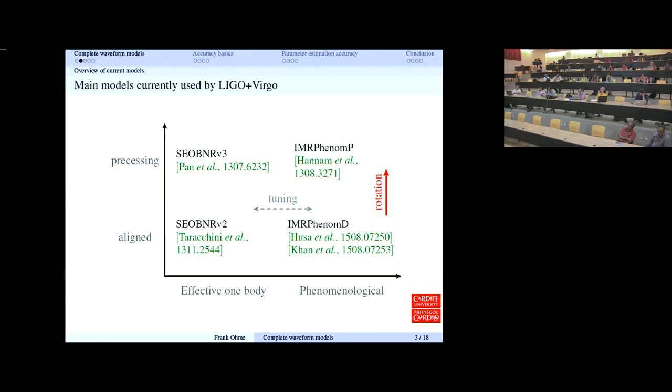Precessing waveforms can be modeled quite accurately by using non-precessing waveforms and just rotating the waveforms appropriately. The rotation that we need is the precession of the orbital plane for a fixed observer. There's also some amount of information flowing in the horizontal direction. The phenom models these days use some EOB waveforms to inform the inspiral, and the same numerical relativity waveforms are used on both sides. So they're not completely independent, even though in the details they use very different techniques.